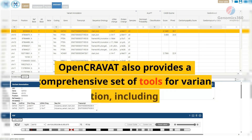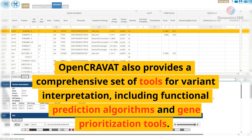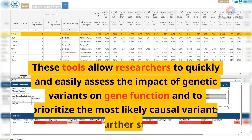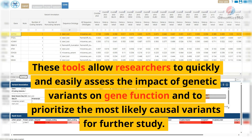OpenCRAVAT also provides a comprehensive set of tools for variant interpretation, including functional prediction algorithms and gene prioritization tools. These tools allow researchers to quickly and easily assess the impact of genetic variants on gene function and to prioritize the most likely causal variants for further study.